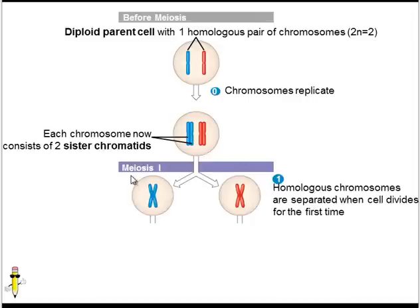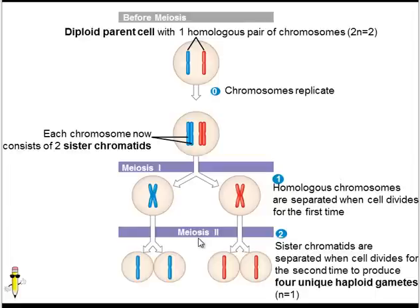The first half of meiosis is called meiosis I. This is a cell division in which one chromosome ends up in one cell and the other chromosome ends up in the other cell. Note that the chromosomes still consist of their sister chromatids. Then these cells are going to divide again — this is called meiosis II. During this cell division, the sister chromatids are pulled apart and separated into different cells. So at the end of meiosis, we end up with four haploid gametes. These are haploid because they only have half of the chromosome number compared to the original diploid parent cell — so instead of 2N equals 2, we now have N equals 1.